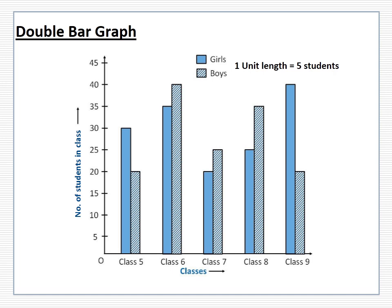On the x-axis we will mention the classes 5, 6, 7, 8, and 9. On the y-axis we will mention the number of students: 5, 10, 15, 20, 25, 30, 35, 40, 45. Now, while drawing a double bar graph, as we are representing two sets of data, we will differentiate the bars either with two different colors or some design in the bars. You can see that there are two boxes drawn on the top.